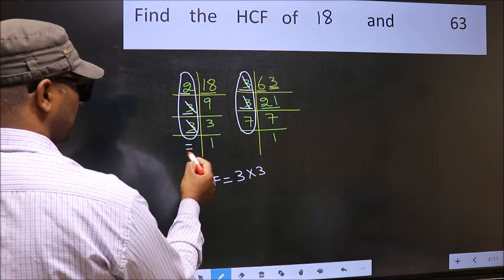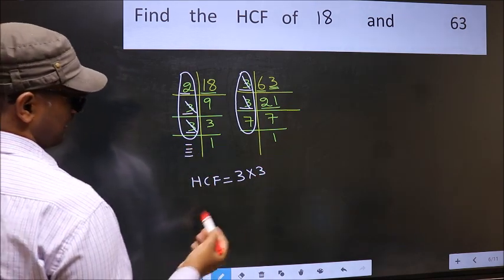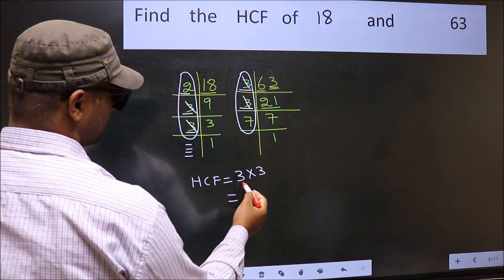No more numbers have been left out. So our HCF is 3×3. 9 is our HCF.